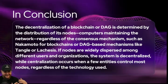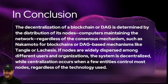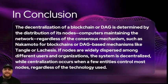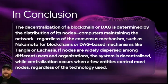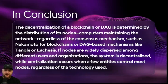In conclusion: is a DAG a blockchain? Is a blockchain a DAG? Is a DAG centralized or decentralized? The decentralization of a blockchain or DAG is determined by the distribution of its nodes, regardless of the consensus mechanism — whether Nakamoto for blockchains or DAG-based mechanisms like Tangle or Lachesis. If nodes are widely dispersed among different users and organizations, the system is decentralized. Centralization occurs when a few entities control most of the nodes, regardless of the technology used.